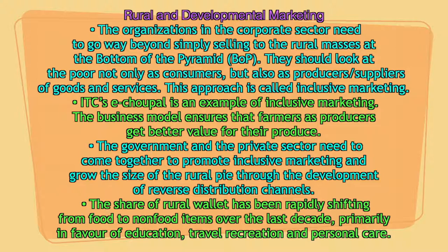For example, ITC's e-Choupal — wheat farmers, shrimp farmers, soybean farmers — are getting good prices at their doorstep without depending on middlemen. Corporates are working with potato farmers, chip manufacturers, tomato sauce manufacturers, and spice producers. Contract farming is coming up. The ITC e-Choupal model illustrates how the government and private sector need to come together to promote inclusive marketing, embracing everyone in the marketing process.